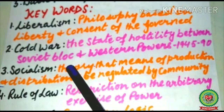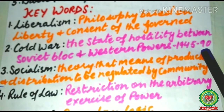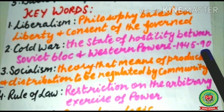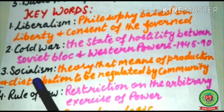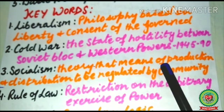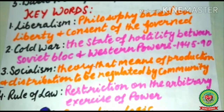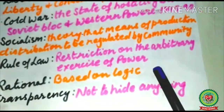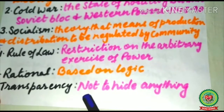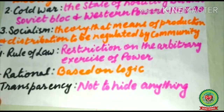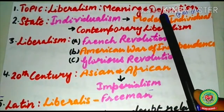The next keyword is Cold War — the state of hostility between the Soviet bloc and Western powers from 1945 to 1990. Socialism means a theory where the means of production and distribution are regulated by the community. Rule of law means restriction on the arbitrary exercise of power. Rational means based on logic. Transparency means not to hide anything.